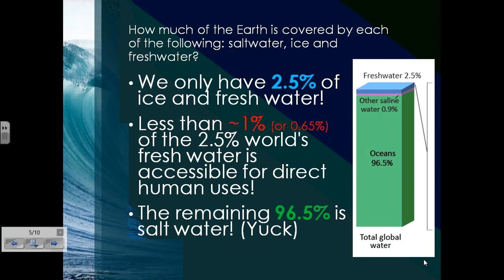When breaking it down into salt water, ice, and fresh water, we only have 2.5% of ice and fresh water. That's important because that's the normal, everyday water that we use to drink, take baths, shower, wash our cars, and water our lawns. We only have about 2.5% of this, and less than 1% of that 2.5% is actually accessible, because much of it is unfortunately trapped in glaciers. The remaining 96.5% is salt water — the stuff you're unable to drink.